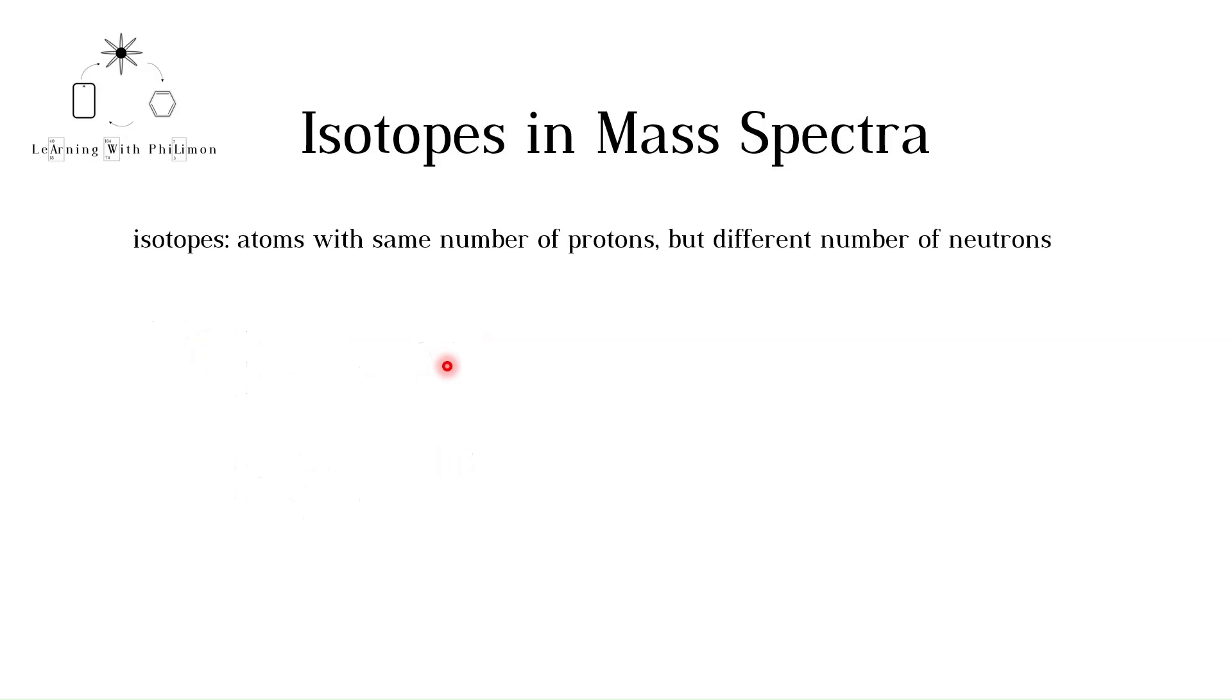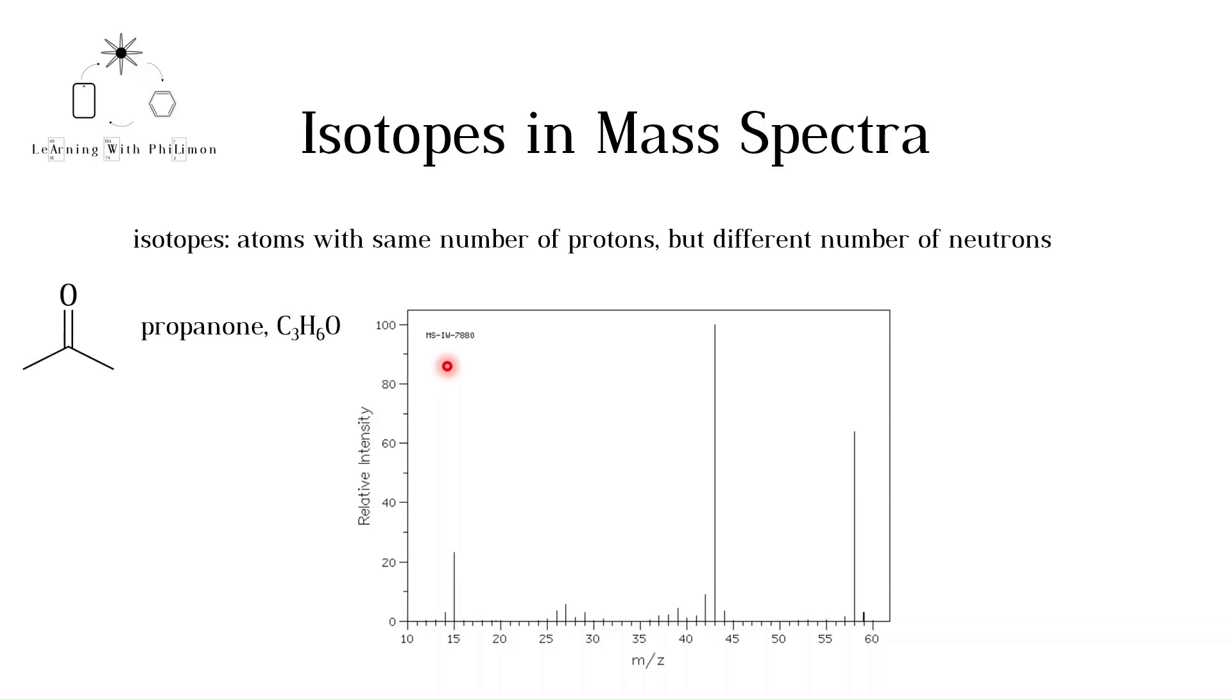But how does this apply to mass spectrometry? Here we see the mass spectrum of propanone, also commonly known as acetone. Propanone has a molecular formula of C3H6O. Adding up the relative atomic masses, we get a relative molecular mass of 58.